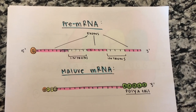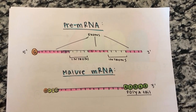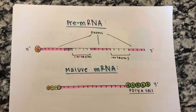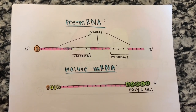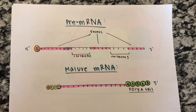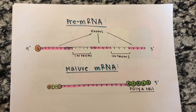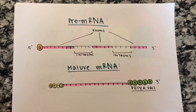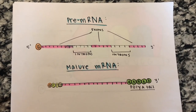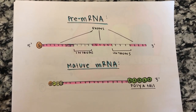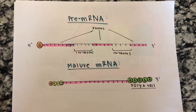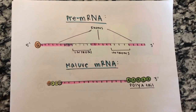To turn pre-mRNA to a more mature form, mRNA, introns are removed, a 5' cap is added, and that cap serves as a bonding site for the ribosome. To attach the ribosome, a 3' polyA tail is also added.